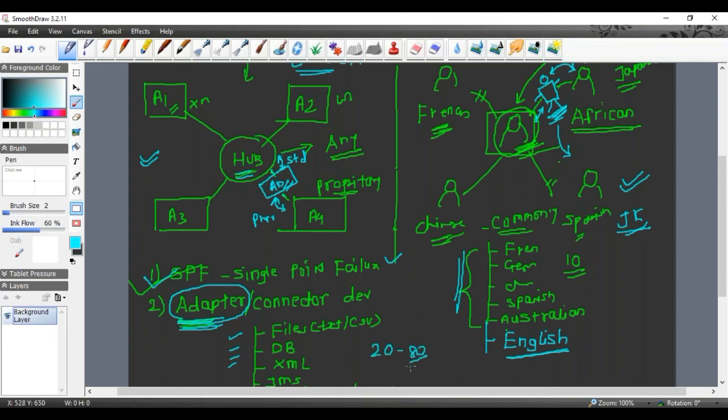Whenever customers started approaching these integration companies, the ratio was reverse. Almost like 20-80. So 80% of the applications are homegrown, proprietary, or legacy applications, and only 20% were standard applications. That was the biggest headache for hub and spoke people. They were spending their whole time developing adapters. They were not getting time to improve the hub product itself.